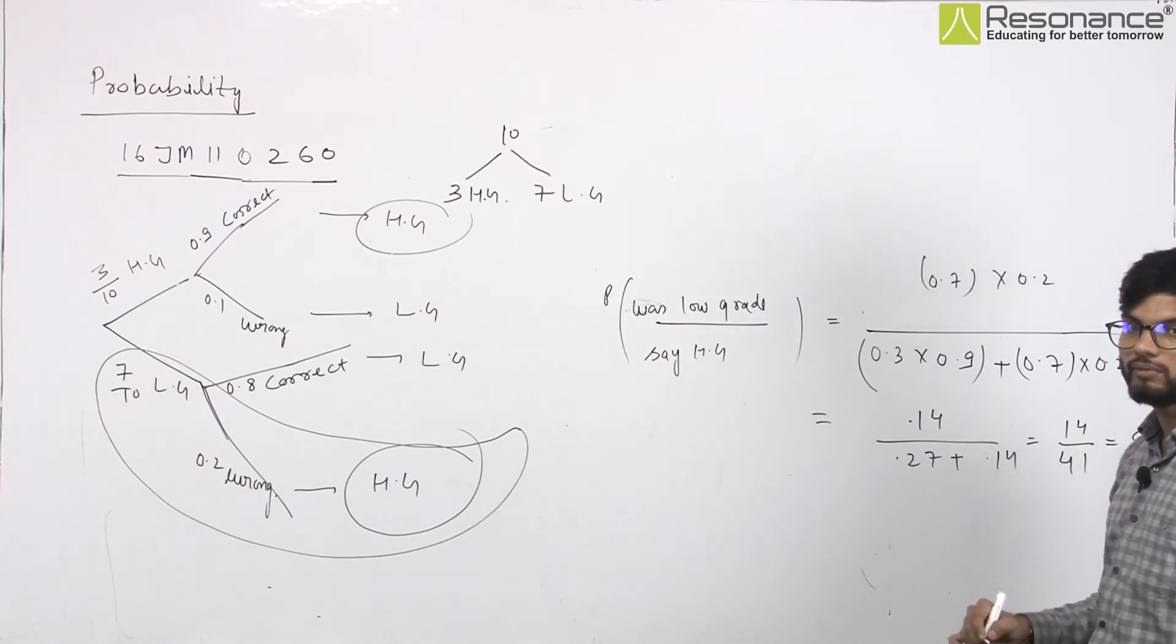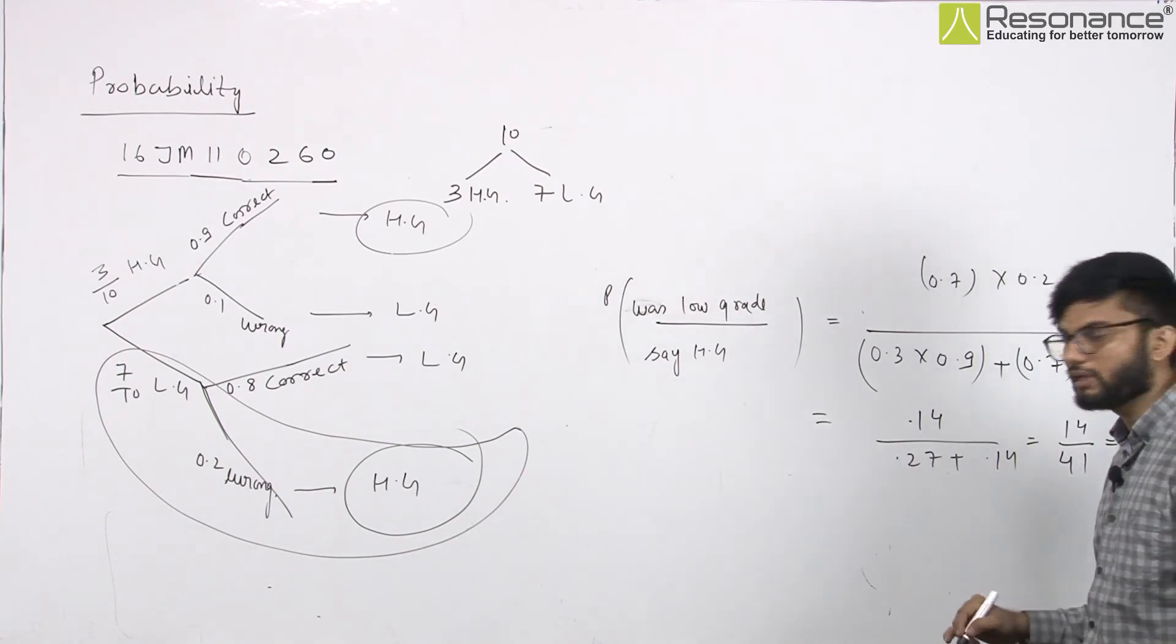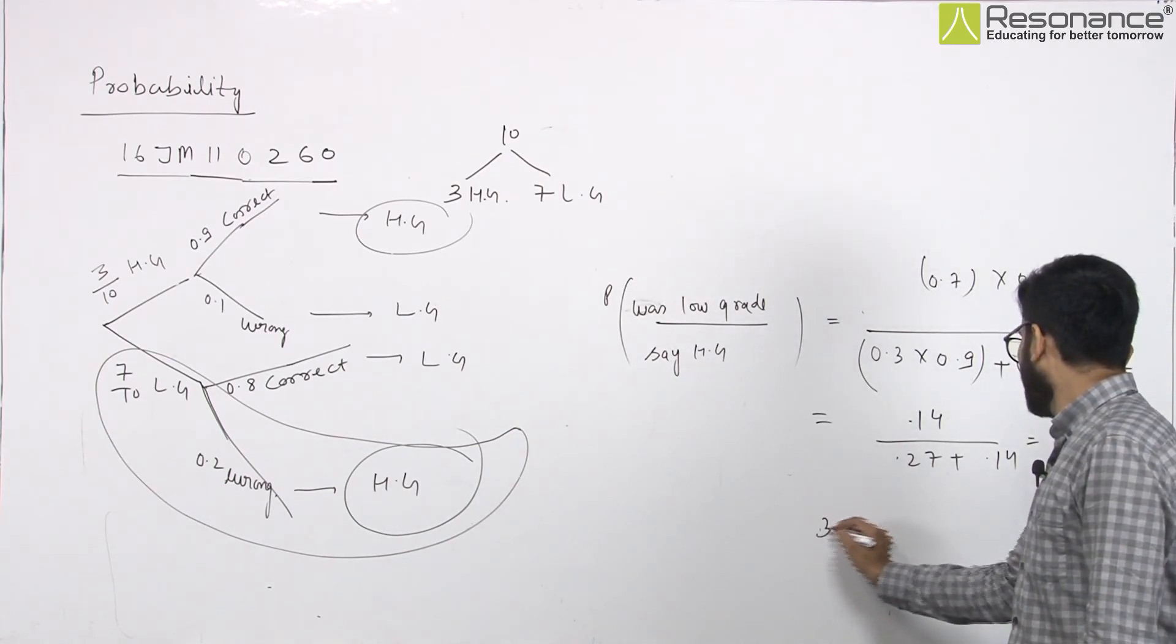And this will be the co-prime number. A, Y, B. So, it will not cancel. So, what did we ask? 3A minus B.